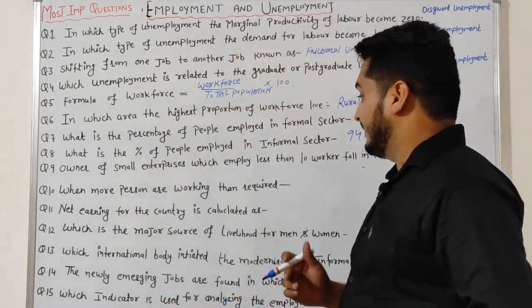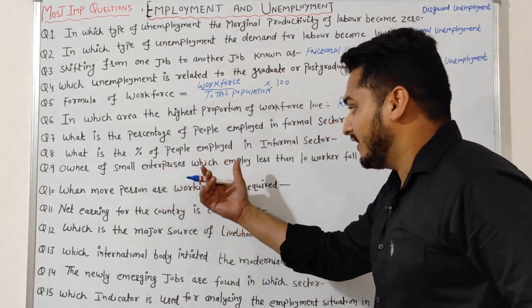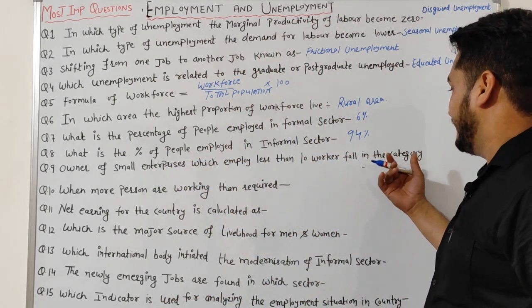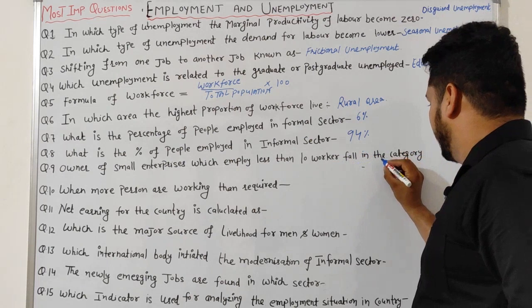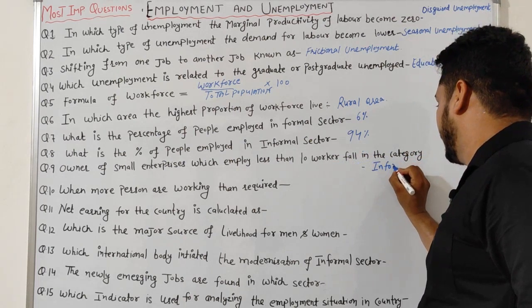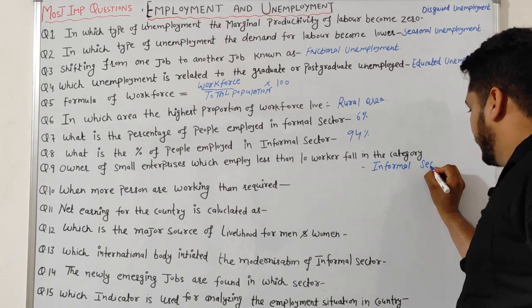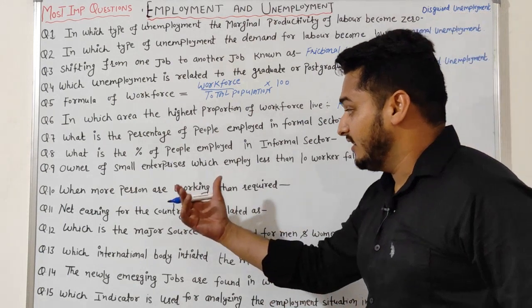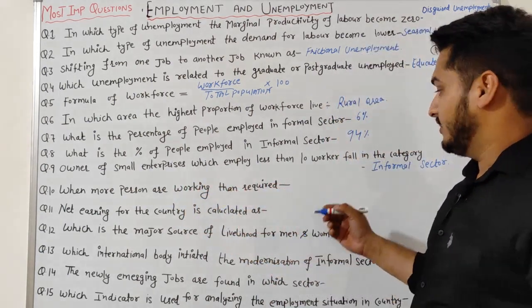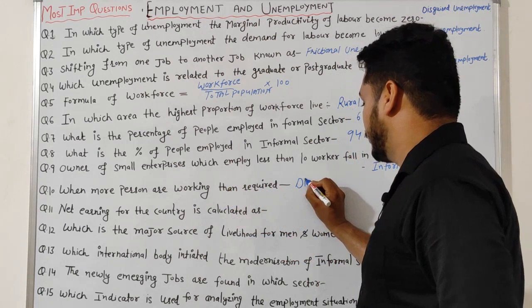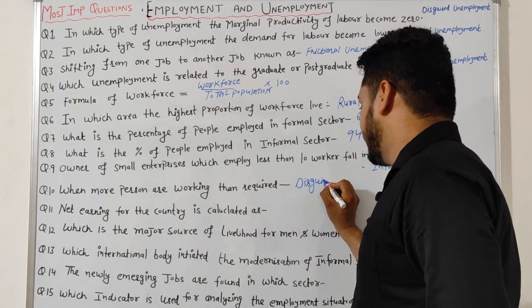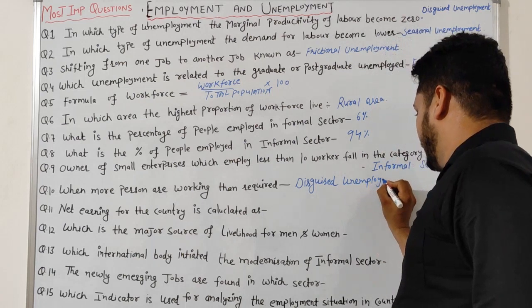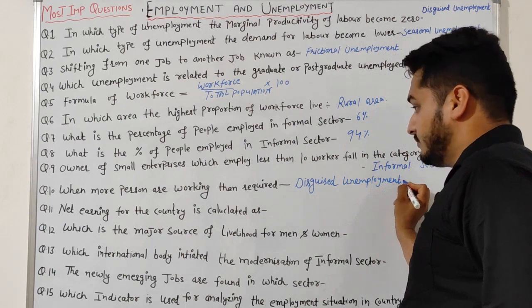Question 8: Owners of small enterprises which employ less than 10 workers fall in the category of the informal sector. Question 10: When more persons are working than required, it is known as disguised unemployment — this is a very important question.